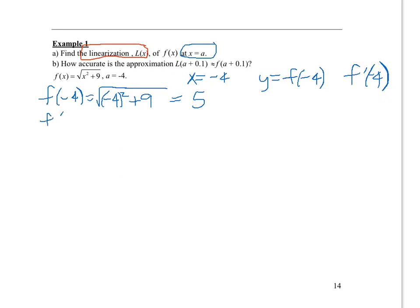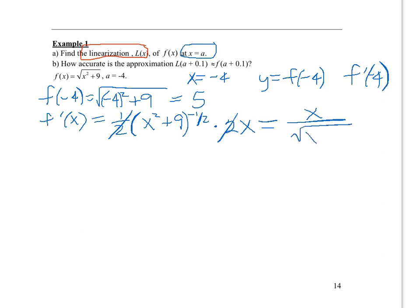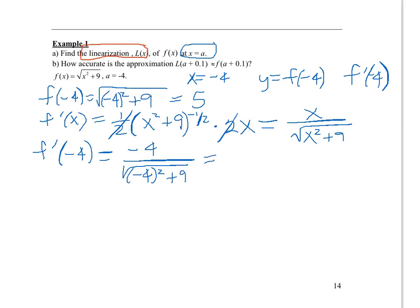Now we need the derivative f prime of x. That square root of x squared plus 9 is really x squared plus 9 to the one-half power, so we follow the chain rule: one half times the quantity x squared plus 9 to the negative one-half, times the derivative of the inside which is 2x. The 2 and the one-half cancel, leaving x over the square root of x squared plus 9. Evaluating at x equals negative 4 gives negative 4 divided by the square root of 16 plus 9, which simplifies to negative 4 fifths — that's our slope value.